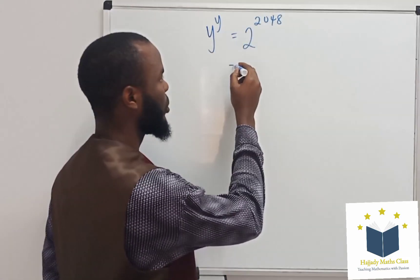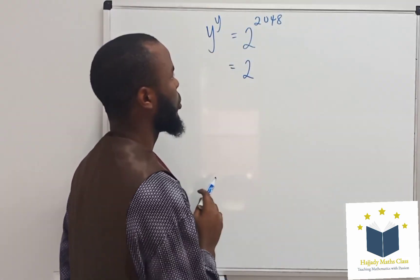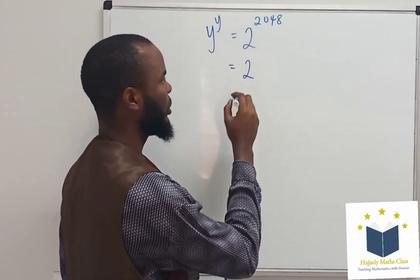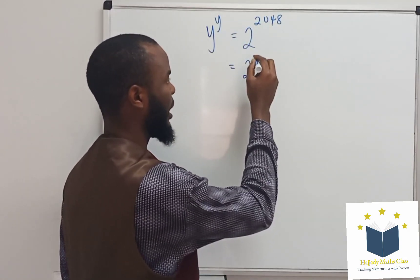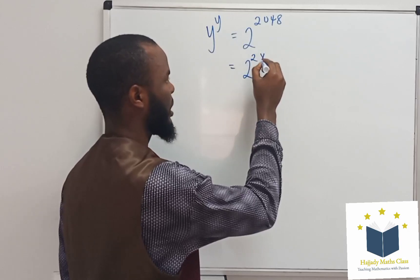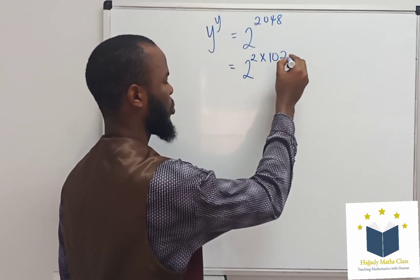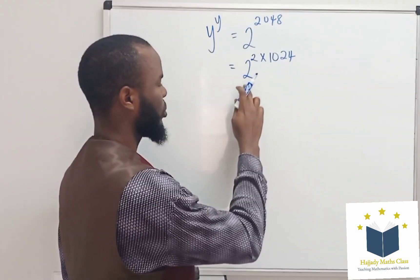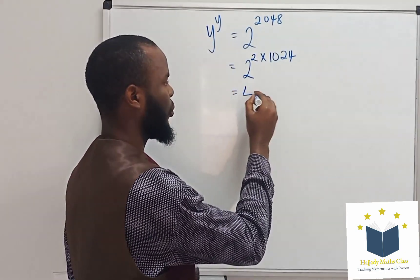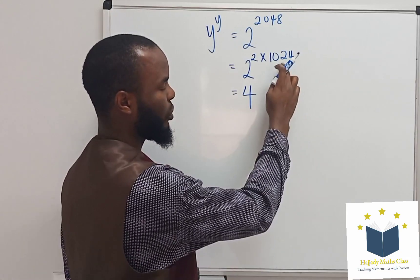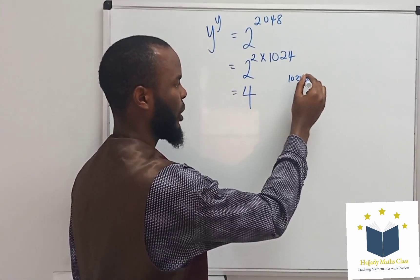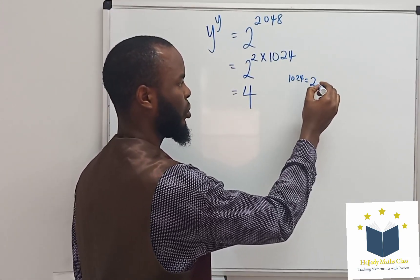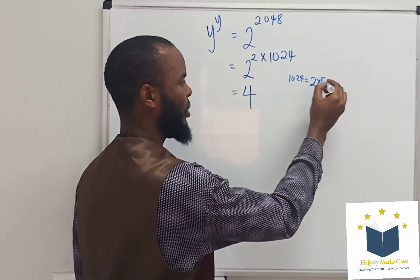I'm going to write 2048 as 2 multiplied by 1024. This is going to give me 2 to the power of 2, which is 4. So 4 to the power of 1024 can be written as 2 times 512.